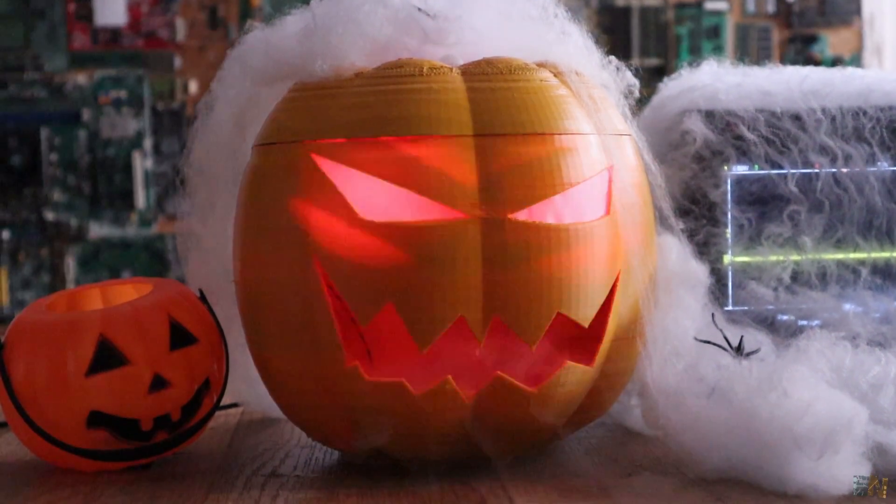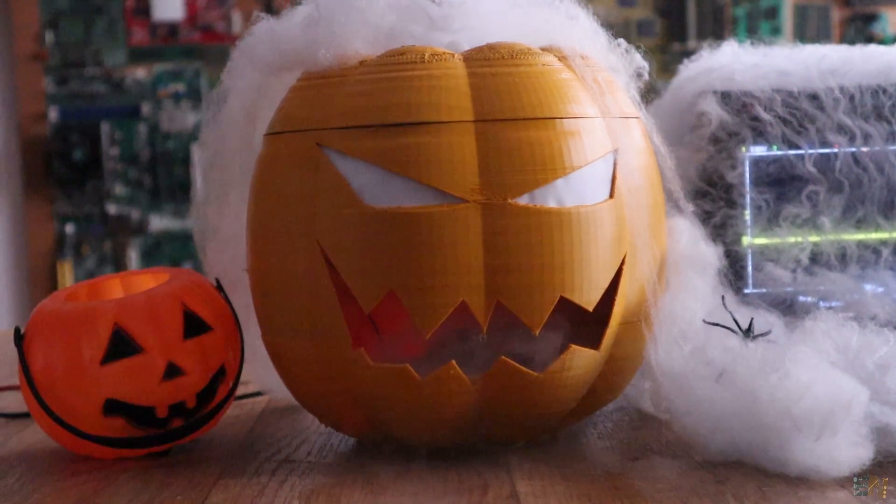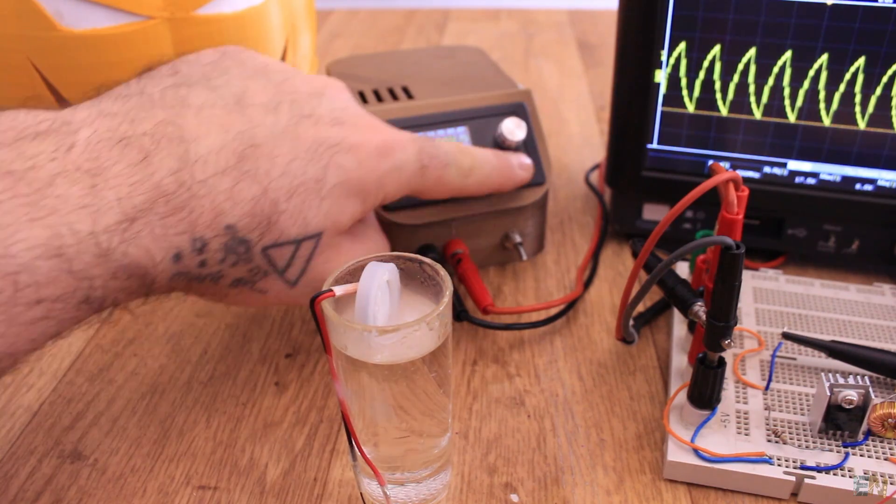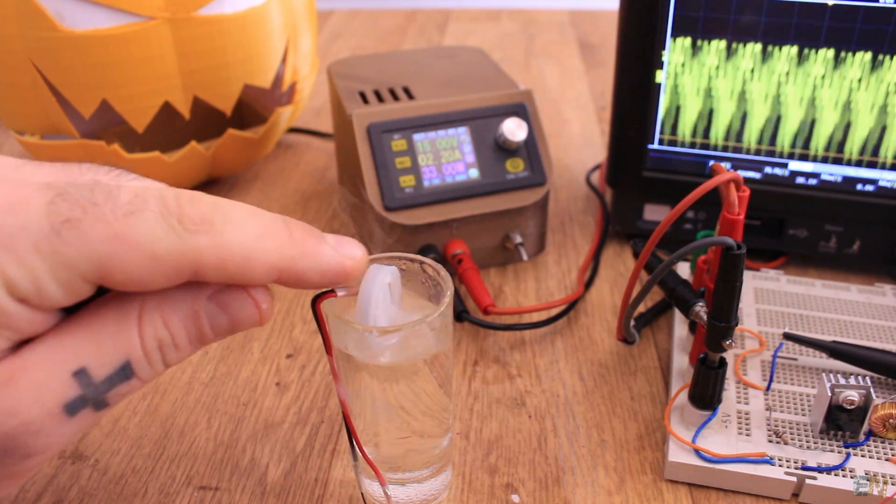We will also see how a mist maker with a piezoelectric component works, even if I had a lot of problems with the 1.7MHz circuit, but I will try to give you a few solutions. So let's see how I've made this.